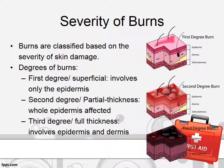In a second degree burn, also known as a partial thickness burn, the whole epidermis is affected. The skin may become red and raw and there may be blister formation. The third one is a third degree burn, also known as a full thickness burn, which involves the epidermis as well as the dermis. In a third degree burn, there may be damage to nerves, fat, tissues, muscles, and blood vessels.